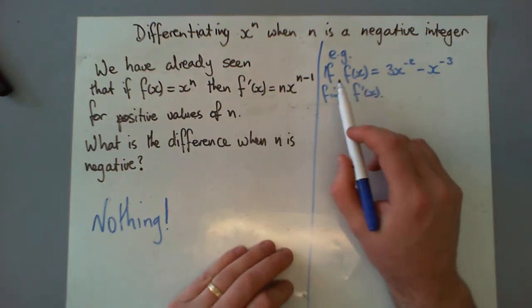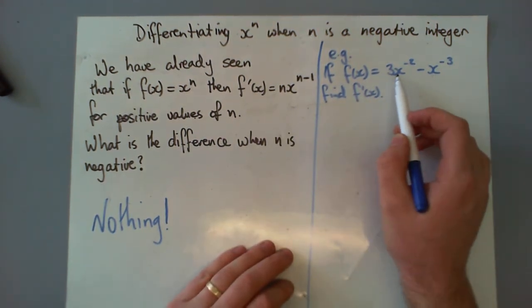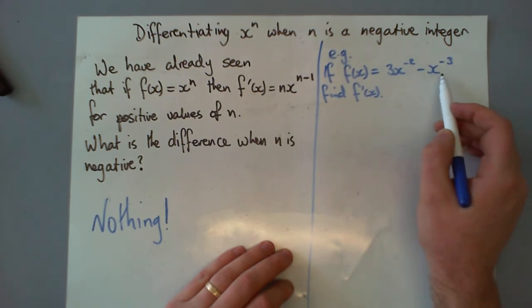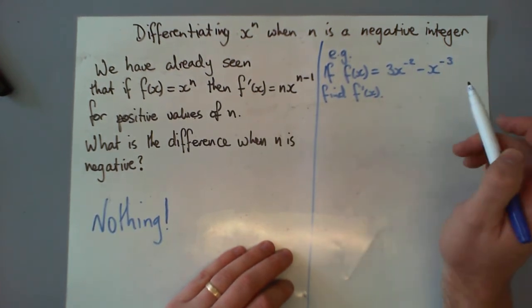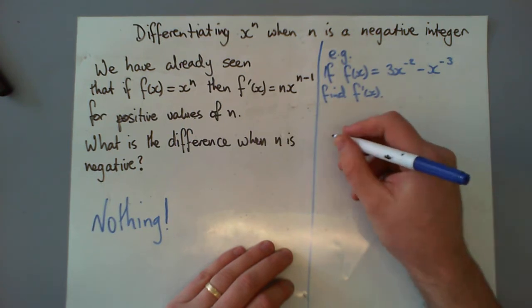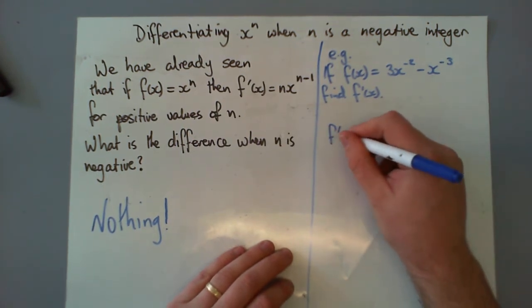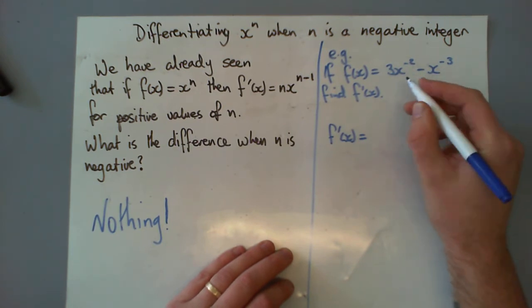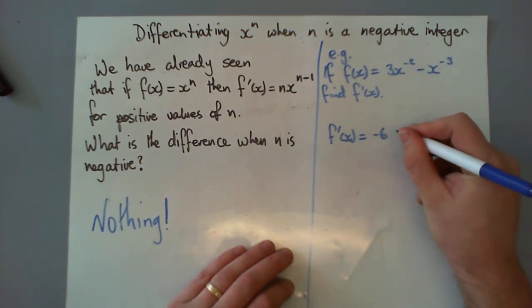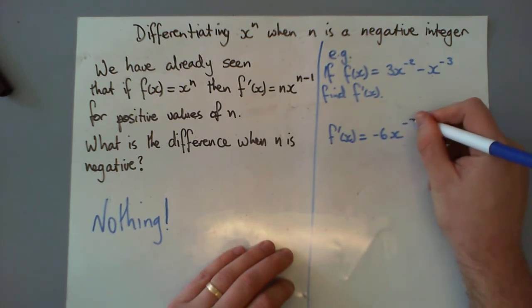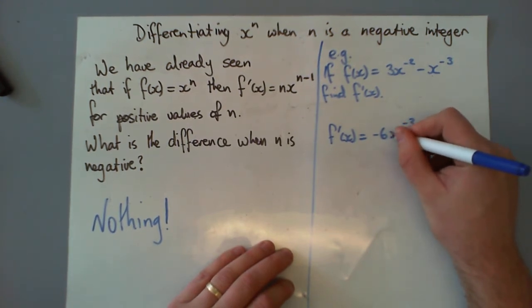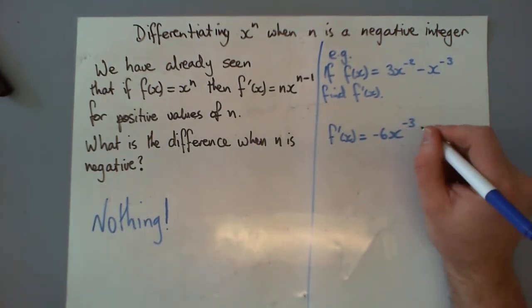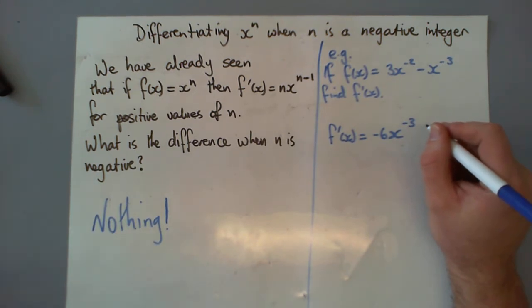So we have a lovely example here. If f of x equals 3x to the negative 2 take x to the negative 3, find f dash of x. We do exactly what we were doing. So f dash of x equals negative 2 comes down, times by our 3 gives us negative 6x to the negative 3. Because we're going to reduce that power by 1, we've got to subtract 1 from that power, so it still comes down.